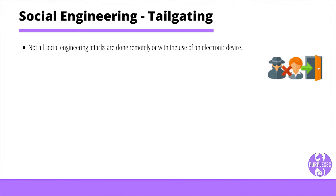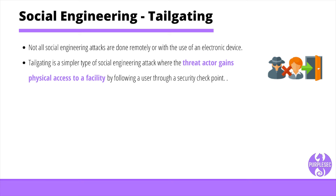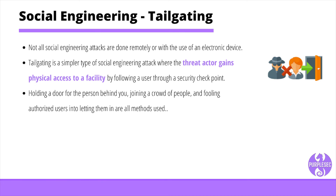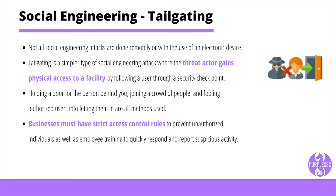Not all social engineering attacks are done remotely or with the use of an electronic device. Tailgating is a simpler type of social engineering attack where the threat actor gains physical access to a facility by following a user through a security checkpoint. Common courtesy is often how threat actors break in — holding a door for the person behind you, joining a crowd of people, and fooling authorized users into letting them in are all methods used. Businesses must have strict access control rules to prevent unauthorized individuals, as well as employee training to quickly respond and report suspicious activity.